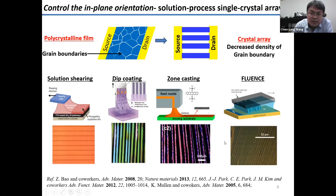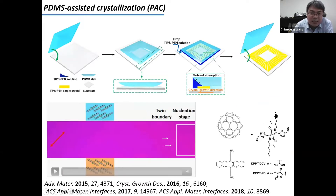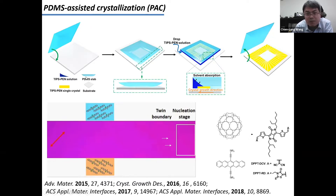Inspired by these studies, in our lab we also hoped to have our own ways to create crystal arrays of conjugate molecules. As a polymer scientist, we know that PDMS is like a solvent sponge — it likes to absorb solutions. So we thought: let's prepare a PDMS sheet, then adhere it to a silicon wafer. In this way, we will have a sandwich-like structure.